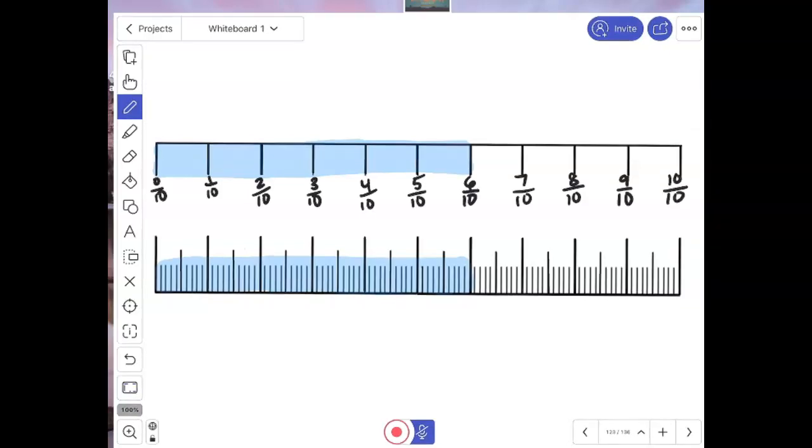Now, the bottom number line, it's not broken just into tenths. Now, the tenths are there. You can see them. They line straight up. But this whole number line is broken into a hundred. If I counted all of these, there would be a hundred tick marks.